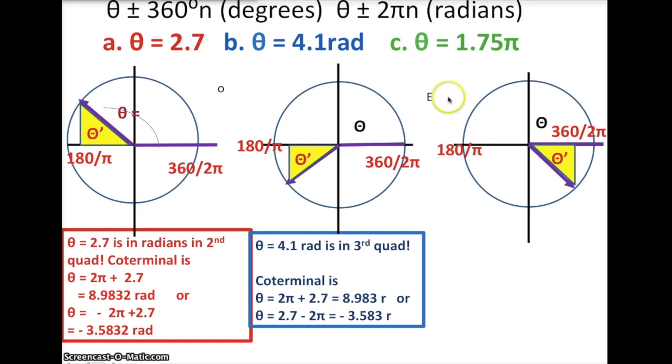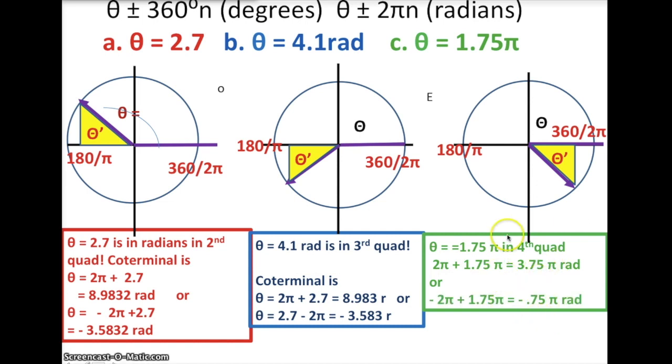So again, to find the coterminal, I'm going to add 2π, 3.75π radians. Big difference if there's a π on this, rather than without a π, like over here. This means I take it times 3.14. Now my unit circle is laid out by 1π, 2π, so that kind of gives me a reference point.